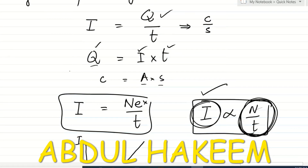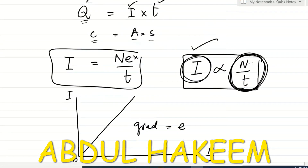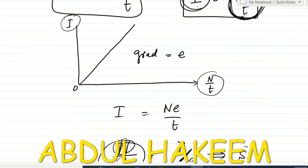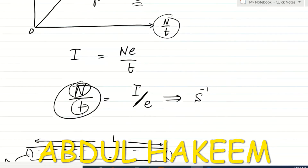Since Q = It, ampere and second are base units, and coulomb is a derived SI unit. I = ne/t, so current is directly proportional to n/t, which is the rate of flow of electrons. When I is plotted against n/t, the graph is a straight line through the origin with gradient e. The rate of flow of electrons n/t = I/e, measured in s⁻¹ since number has no unit.